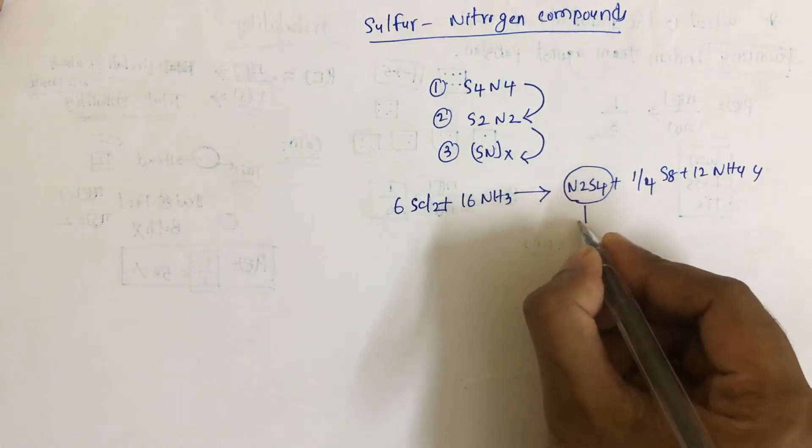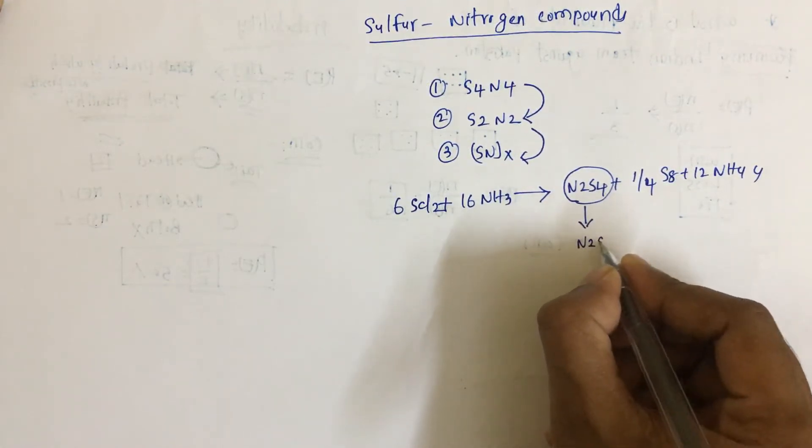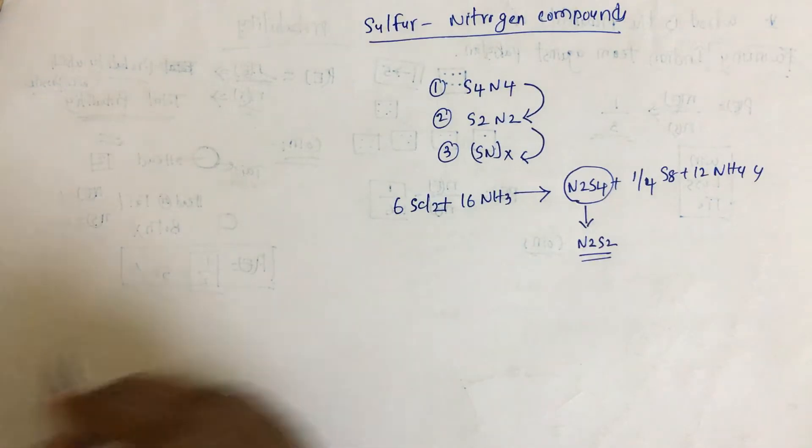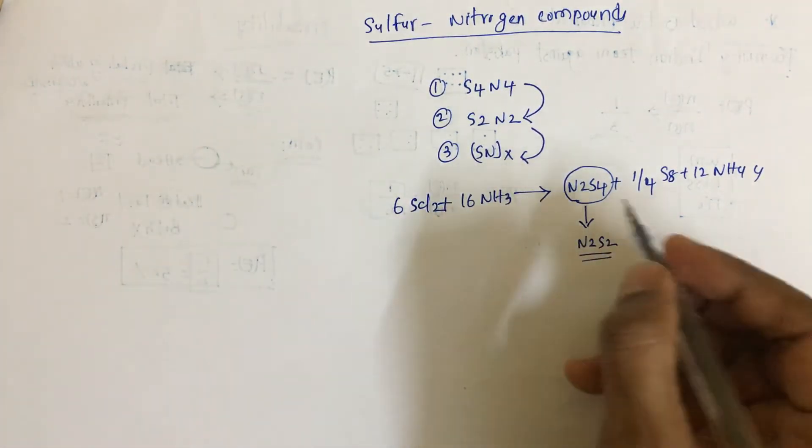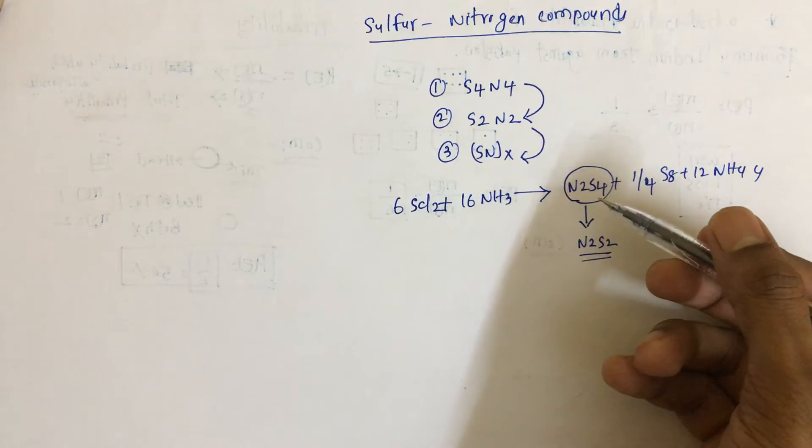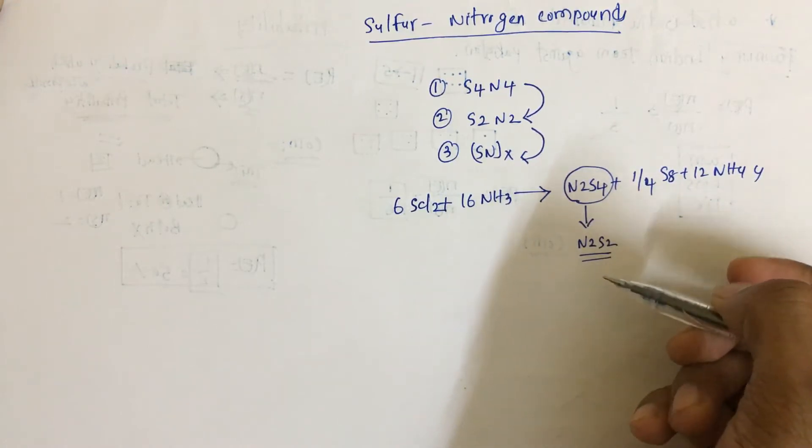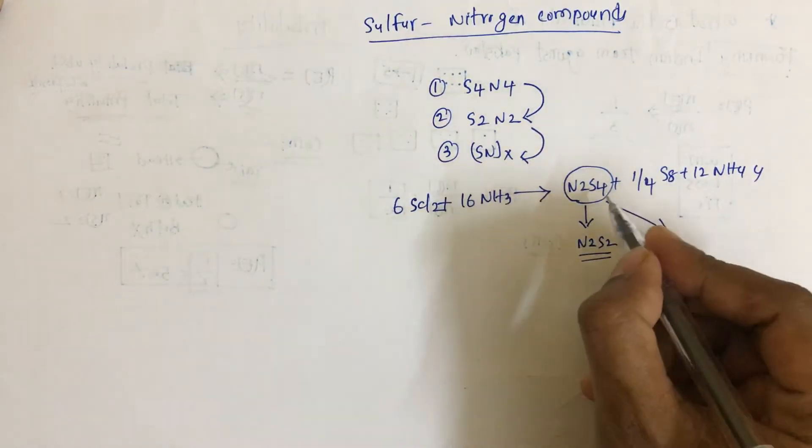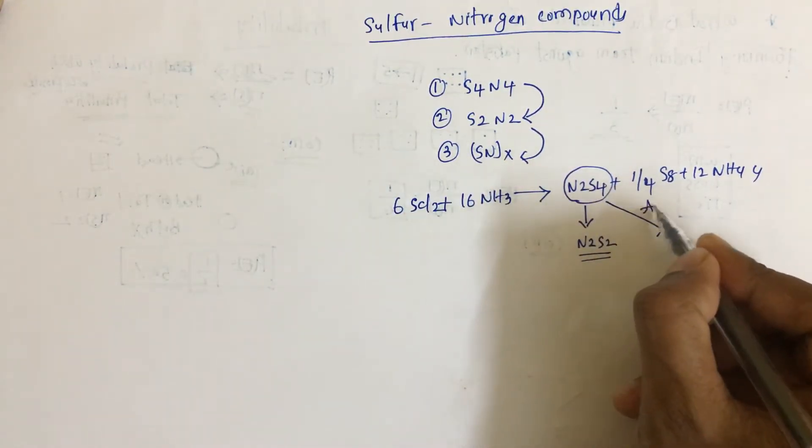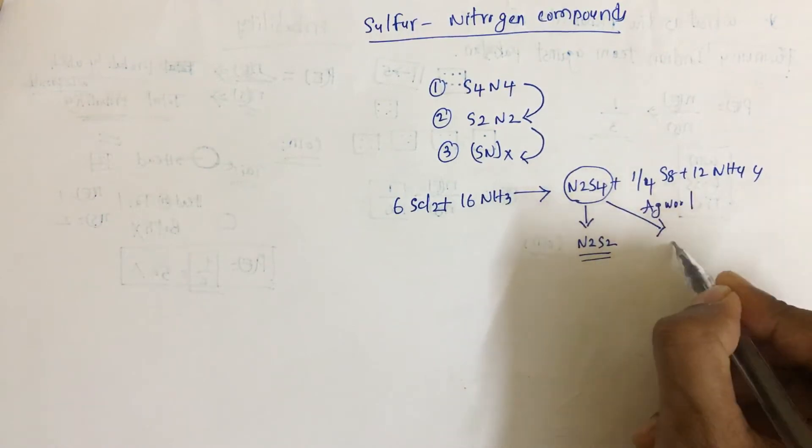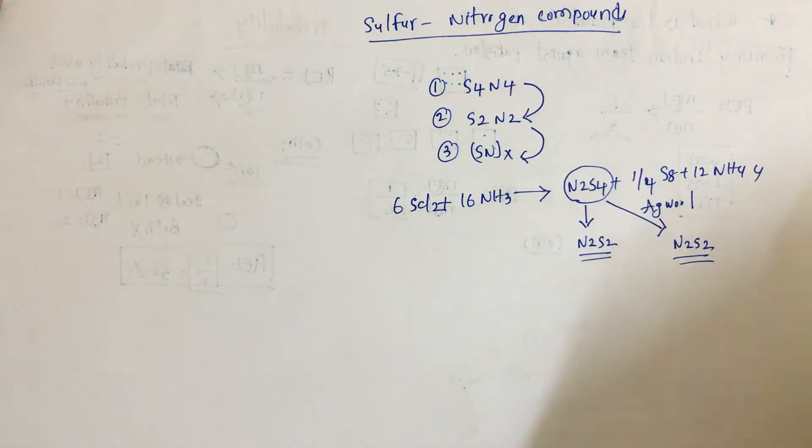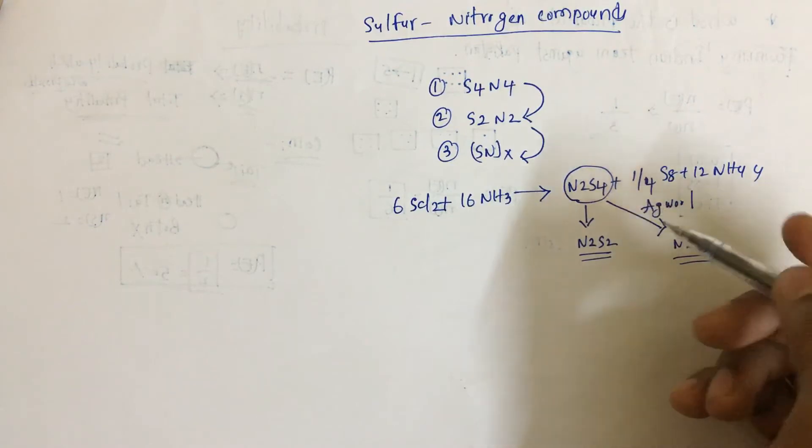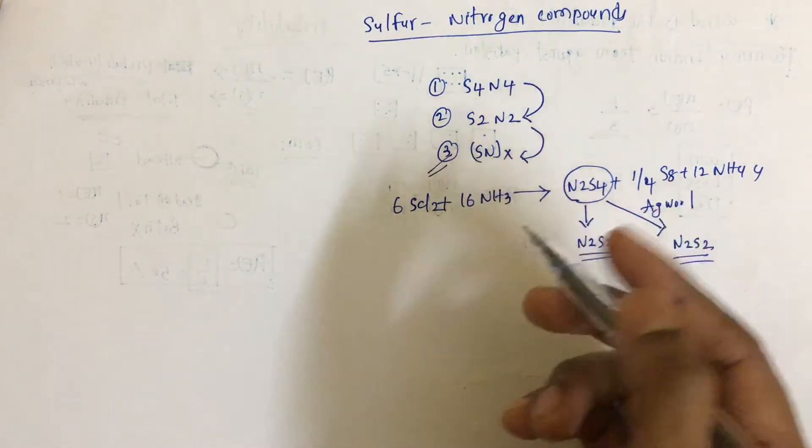If you allow it for some time, it decomposes into N2S2. One more procedure: if we pass this compound through the silver wall, then also it gets converted into N2S2. So these are the methods to prepare N2S2 from N2S4.